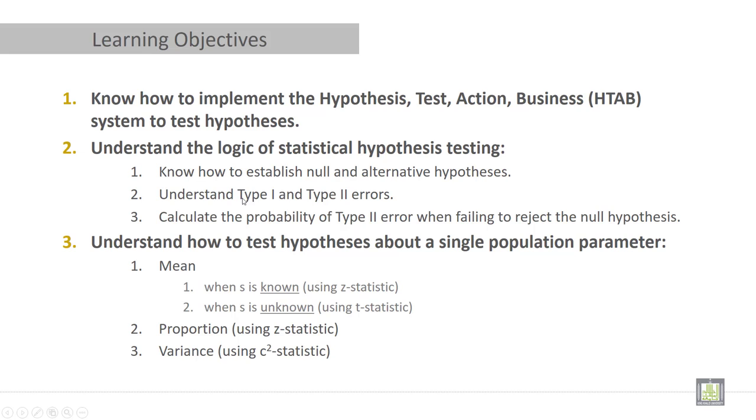It will be helpful to you to identify type 1 and type 2 error. Then calculate the probability of type 2 error when failing to reject the null hypothesis.